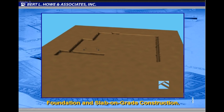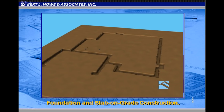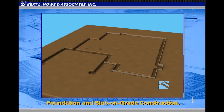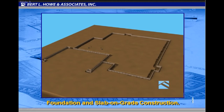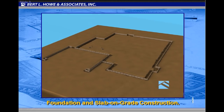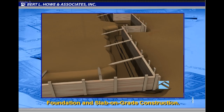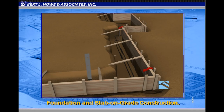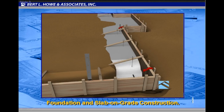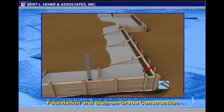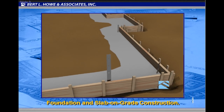Next, additional trenches are dug for the foundation itself. Any necessary formwork is constructed and reinforcing steel to strengthen the foundation is placed within the trench, as well as any foundation hardware intended to attach the wooden structure to the foundation. The foundation and slab are then placed in a two-pour process, with the first pour filling the lower portion of the trenches to a point just below the bottom of the slab.